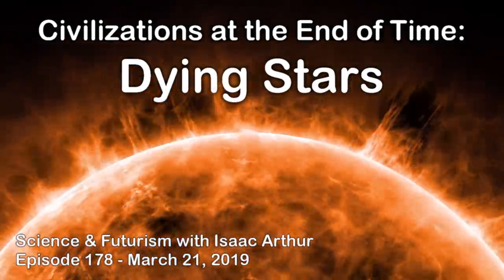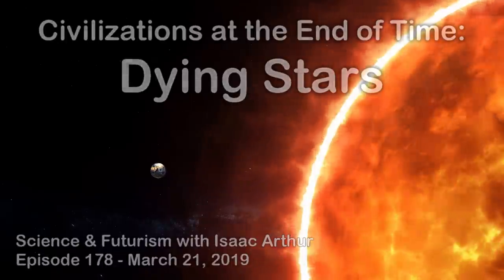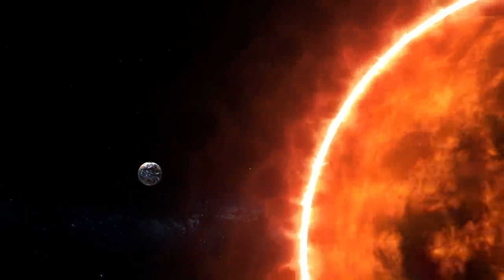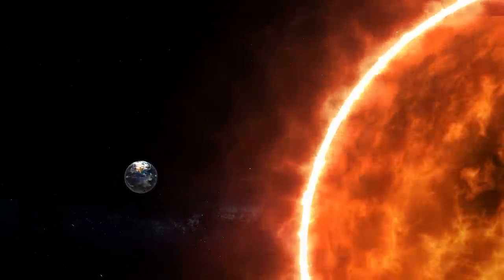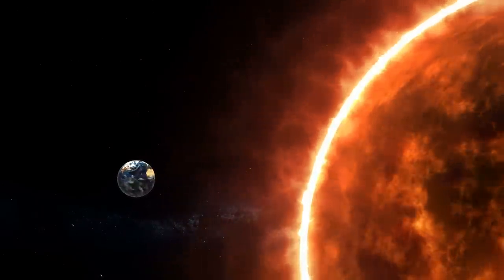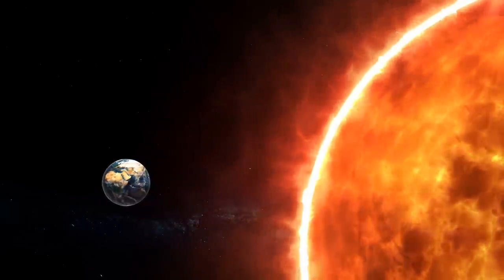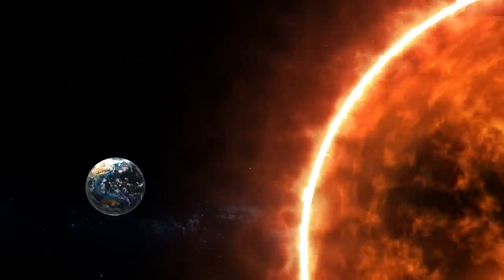So today we return to the Civilizations at the End of Time series after a year-long hiatus. Today we'll be exploring what civilizations might do as their own suns begin to burn out, and what options they have on the table to extend their existence after that. We'll also be discussing the Supernova Engine, one of the most extreme forms of stellar engineering allowed under known physics.